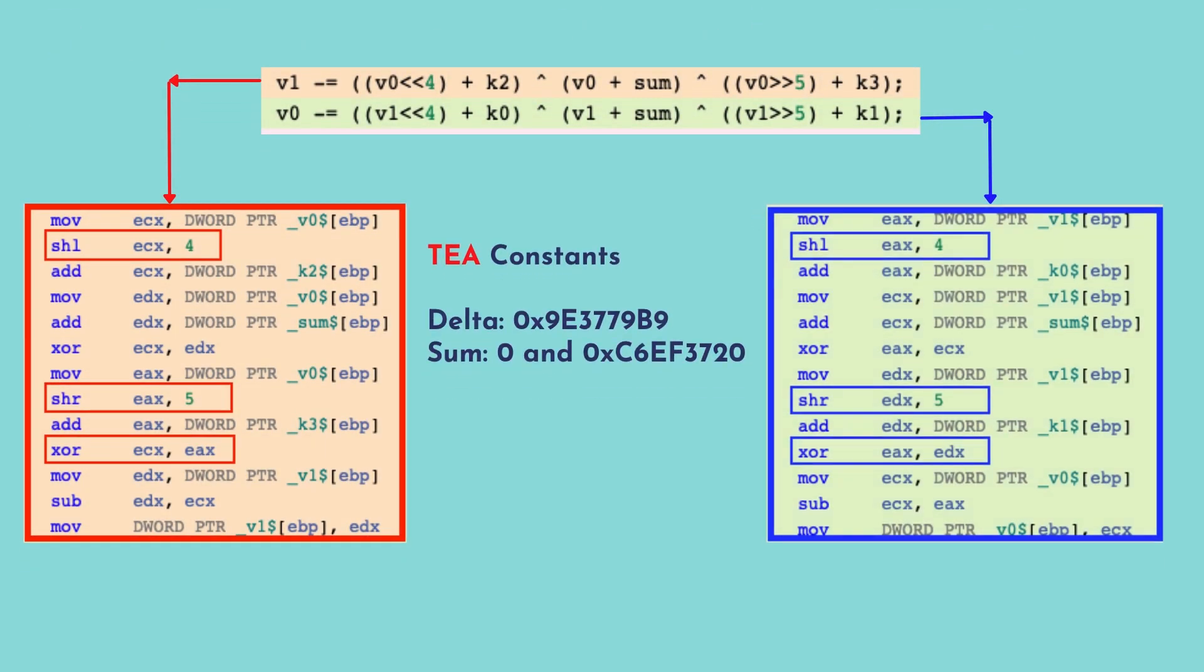On the reverse engineering prospect, how TEA algorithm looks like in assembly code is given here. To identify TEA algorithm, first we have to note down the TEA constants, that is the delta and sum. In encryption, delta is 0x9E3779B9 and sum will be 0. For decryption, the delta will be same and sum will be a different value.